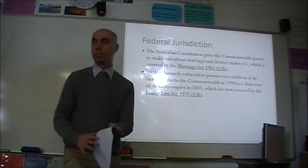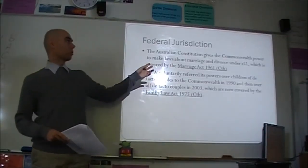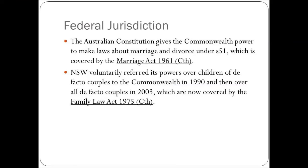State versus federal jurisdiction. We're going to start with what goes to the Commonwealth government. The Australian Constitution gives the Commonwealth powers to make laws about marriage and divorce under Section 51. It is not a state power — it is given to the Commonwealth. The Commonwealth then covers that with the Marriage Act 1961. In terms of marriage, that's the key piece of legislation that you want to be looking at and citing.